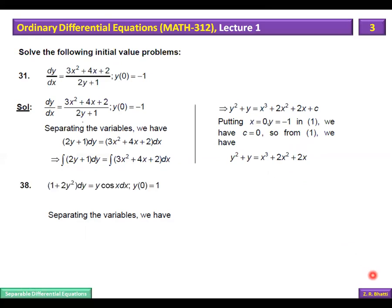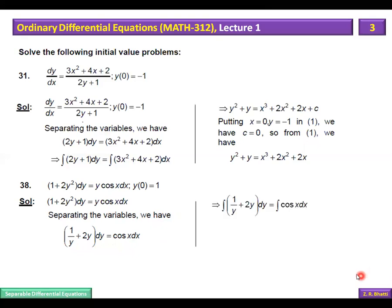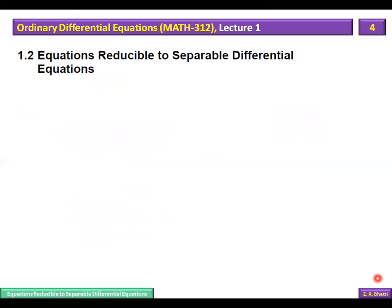Next we have another question in which a differential equation is given. When you separate the variables you get: (1/y + 2y) dy = cos(x) dx. Then when you integrate, the integral of 1/y gives log|y|, the integral of 2y gives y², and the integral of cos(x) gives sin(x) plus constant of integration c. You can then find the value of c and substitute it in, similar to the previous calculation.